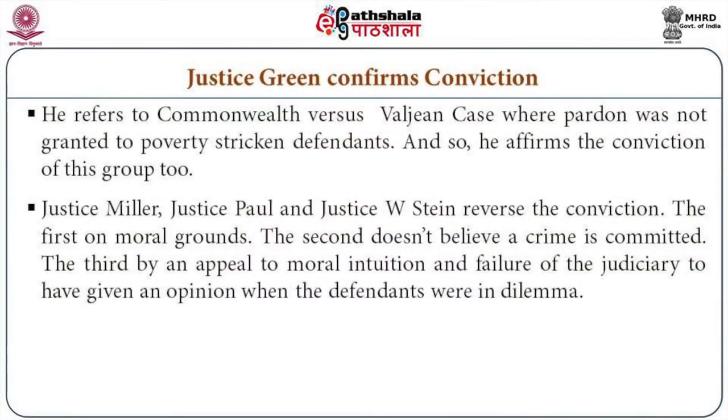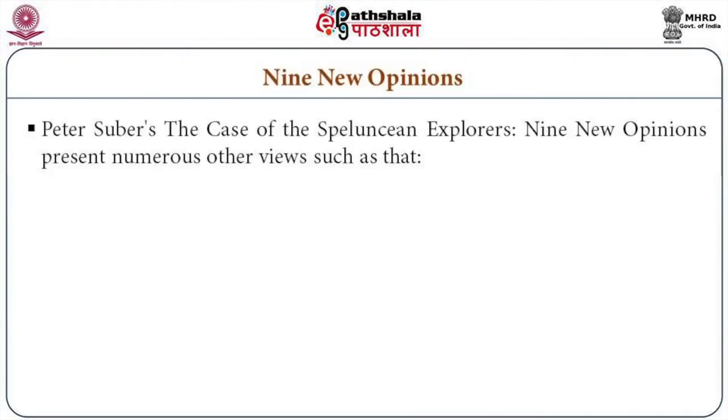Other judgments — Justice Miller, Justice Paul, Justice Stein — reverse the conviction: the first on moral grounds, the second because no crime is believed to have been committed, and the third by an appeal to moral intuition and the failure of the judges to have given an opinion when the defendants were in a dilemma. In the facts of the case, the defendants were told by the medical expert they wouldn't live more than 10 days. Wetmore says they're going to kill someone and asks how they should decide — but there was no response from the judges, the priests, the chief executive, the doctors, or the rescuers. They're left to decide on their own. So what right do the judges now have to convict them when they refused to advise them when asked?